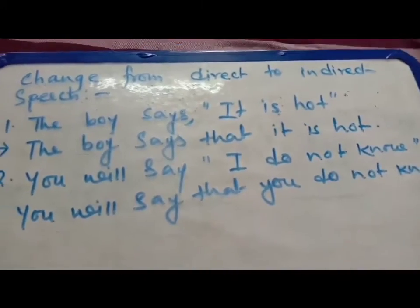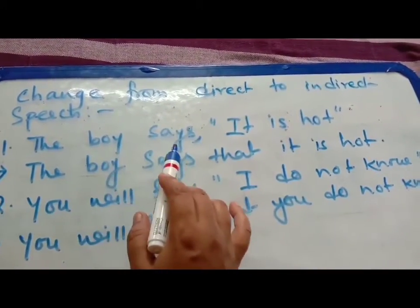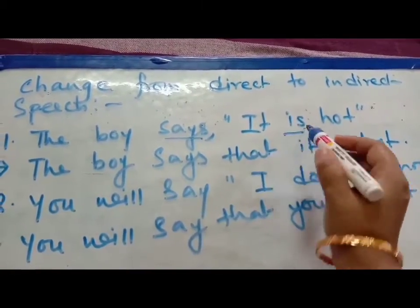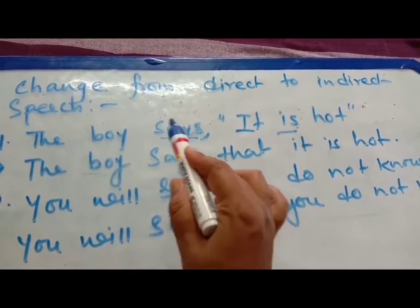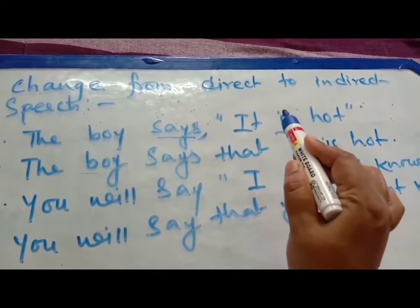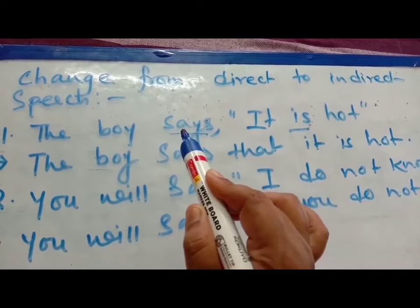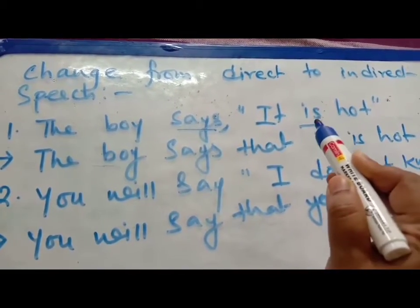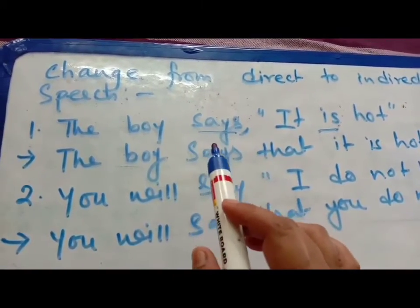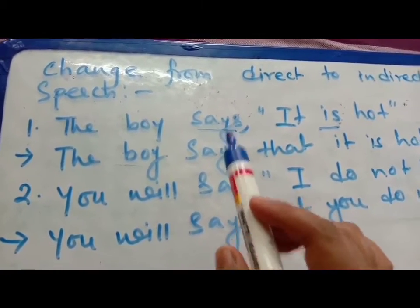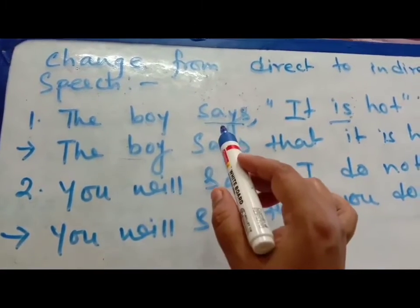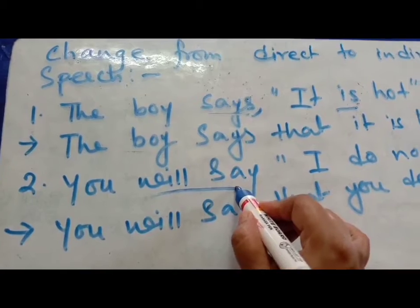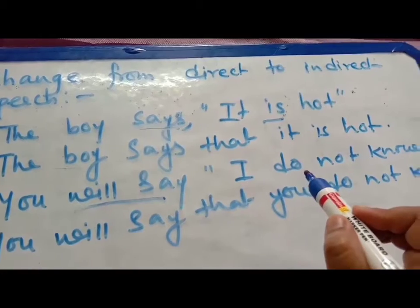The boy says it is hot. You can see the boy says — the boy is the subject and says is the verb. In these sentences, you can find that there are two verbs: says and is. The boy says is the reporting verb and is is the reported verb. According to the reporting verb, the reported verb will be changed. If the reporting verb is in simple present tense or in simple future tense, there will be no change in the reported tense.